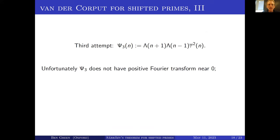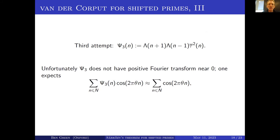That would be our third attempt. But unfortunately, we don't expect it to have positive Fourier transform near zero, because near zero its Fourier transform behaves just like the Fourier transform of the unweighted integers — a Dirichlet kernel, something like sin(Nθ)/sin(θ), which is not positive everywhere.